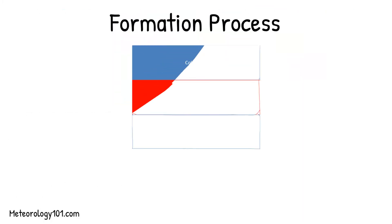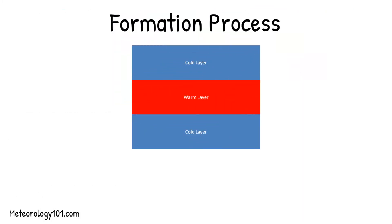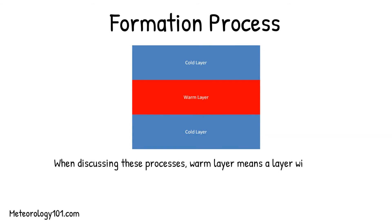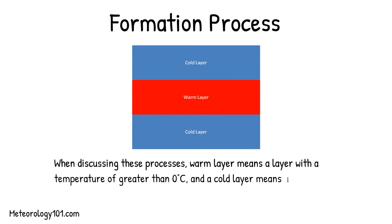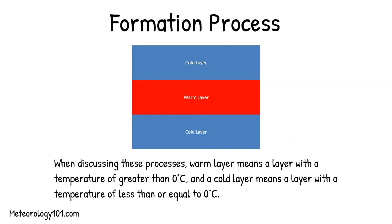When discussing these processes, a warm layer means a layer with a temperature of greater than 0 degrees Celsius, and a cold layer means a layer with a temperature of less than or equal to 0 degrees Celsius.